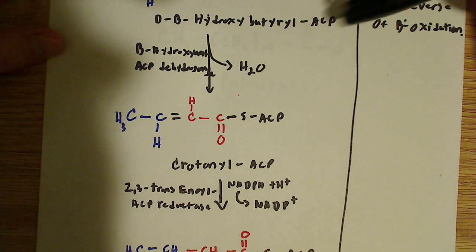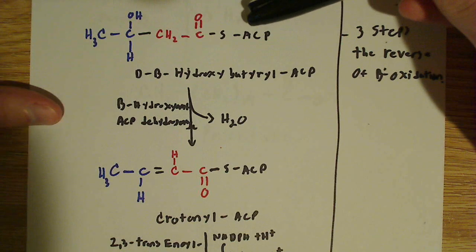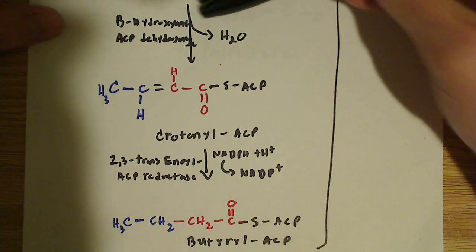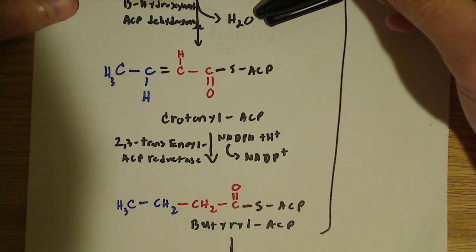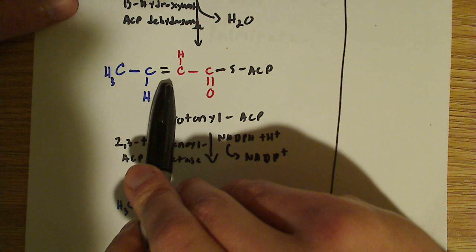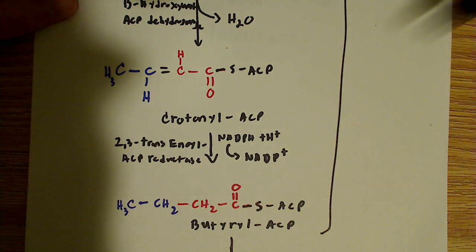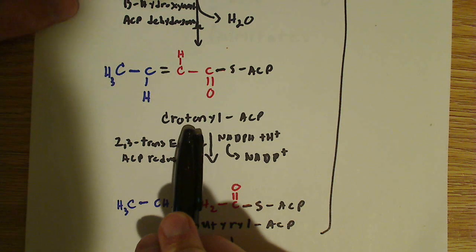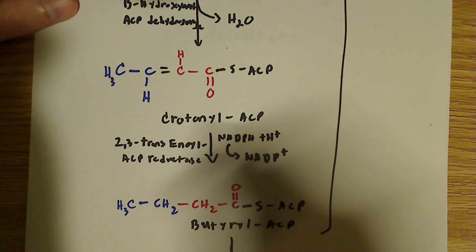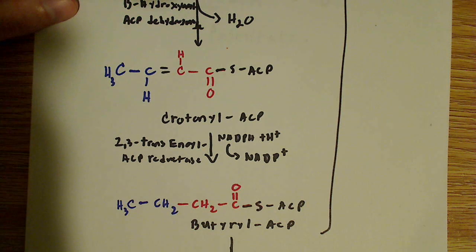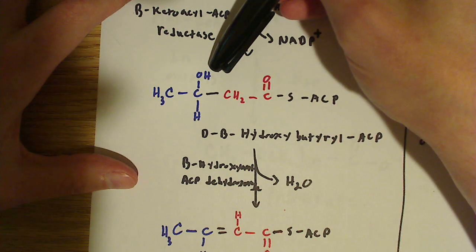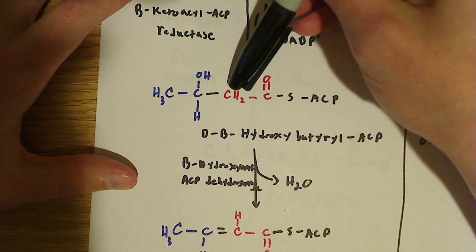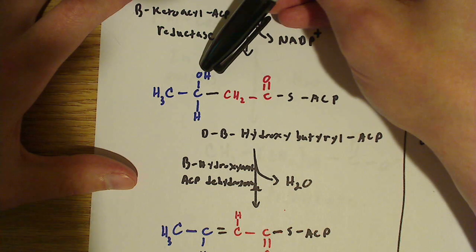Then the next step — we have another enzyme: beta-hydroxyacyl-ACP dehydrogenase. We're going to lose a water molecule and form a carbon-carbon double bond right here. We're going to lose one hydrogen off this carbon and lose the hydroxyl group right there — losing H2O — and that forms this molecule.